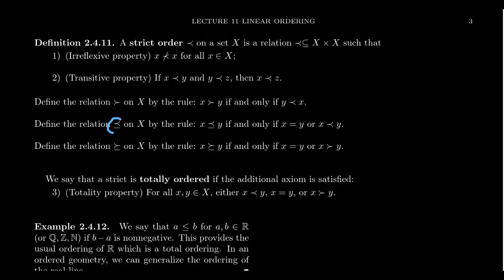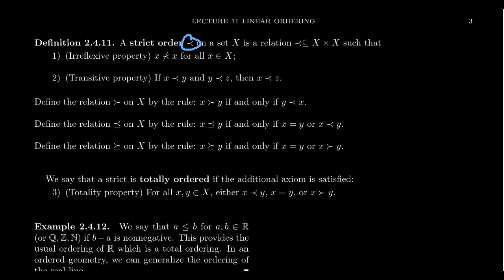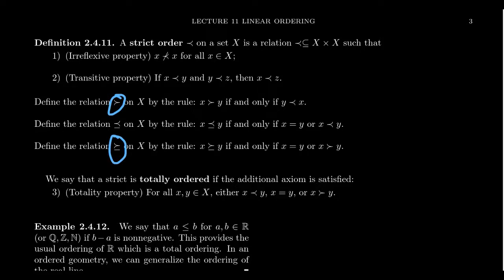Associated to every strict order there's also the related partial order, using a symbol like less than or equal to. An element X is less than or equal to Y if either X is less than Y or X equals Y — note it can't be both, because of the irreflexive property. Similarly, we have a greater than or equal to relation. This gives us four relations: strict less than, strict greater than, less than or equal to, and greater than or equal to. If you have one, you have all four.